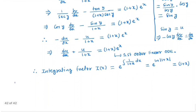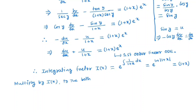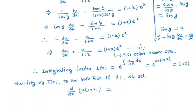So next we will multiply by I(x) on both sides of equation number 1. So we get d/dx of [u times (1+x)] equals (1+x) e^x times (1+x), which is nothing but e^x times (1+x)^2.